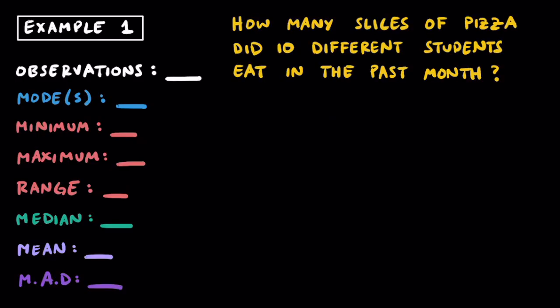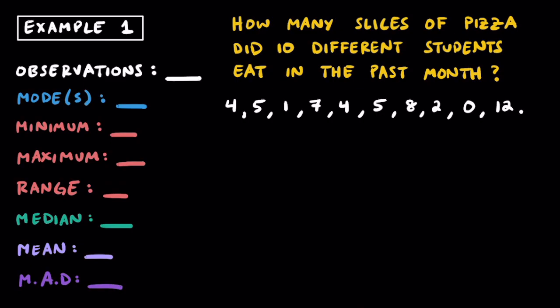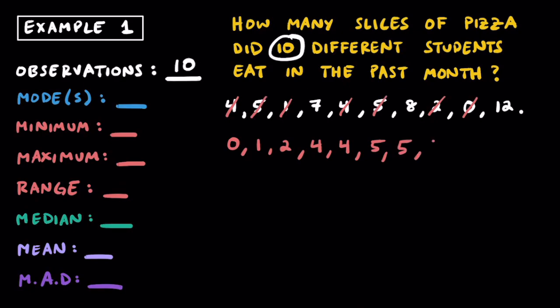Here's example one. Our statistical question is: how many slices of pizza did 10 different students eat in the past month? So let's say these 10 different students responded with the following number of slices they ate. Once we know the number of observations — 10 — typically the next useful thing to do is to order the numbers from least to greatest: 0, 1, 2, 4, 4, 5, 5, 7, 8, and 12.